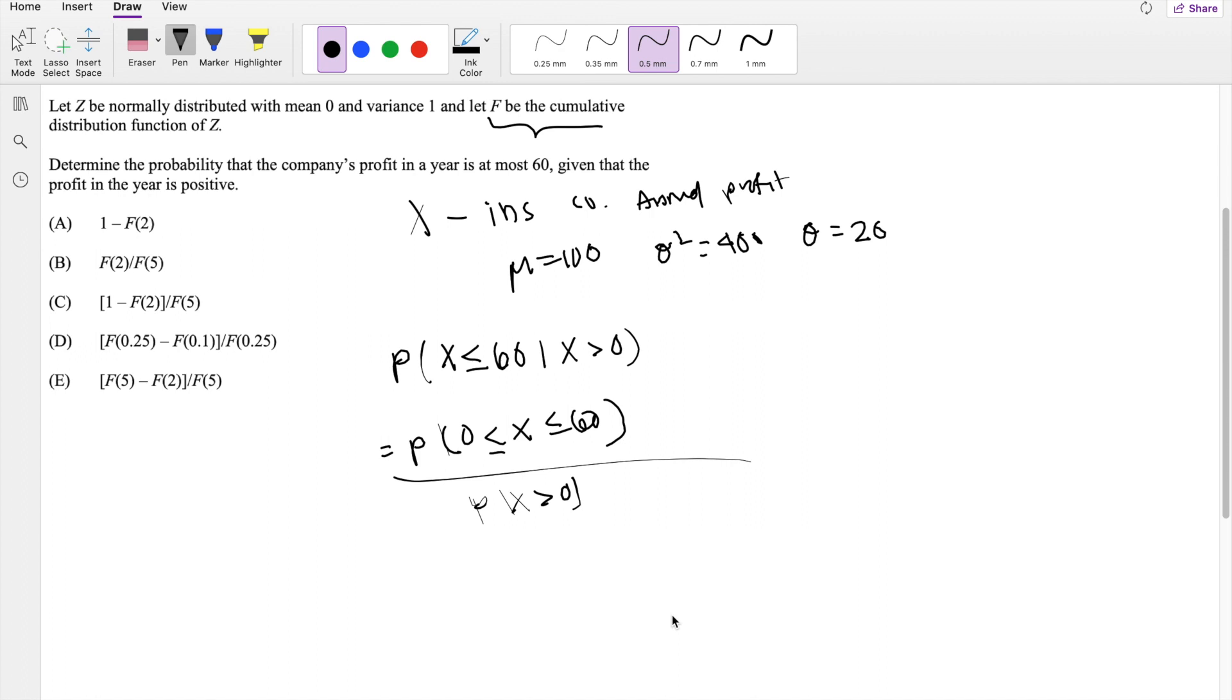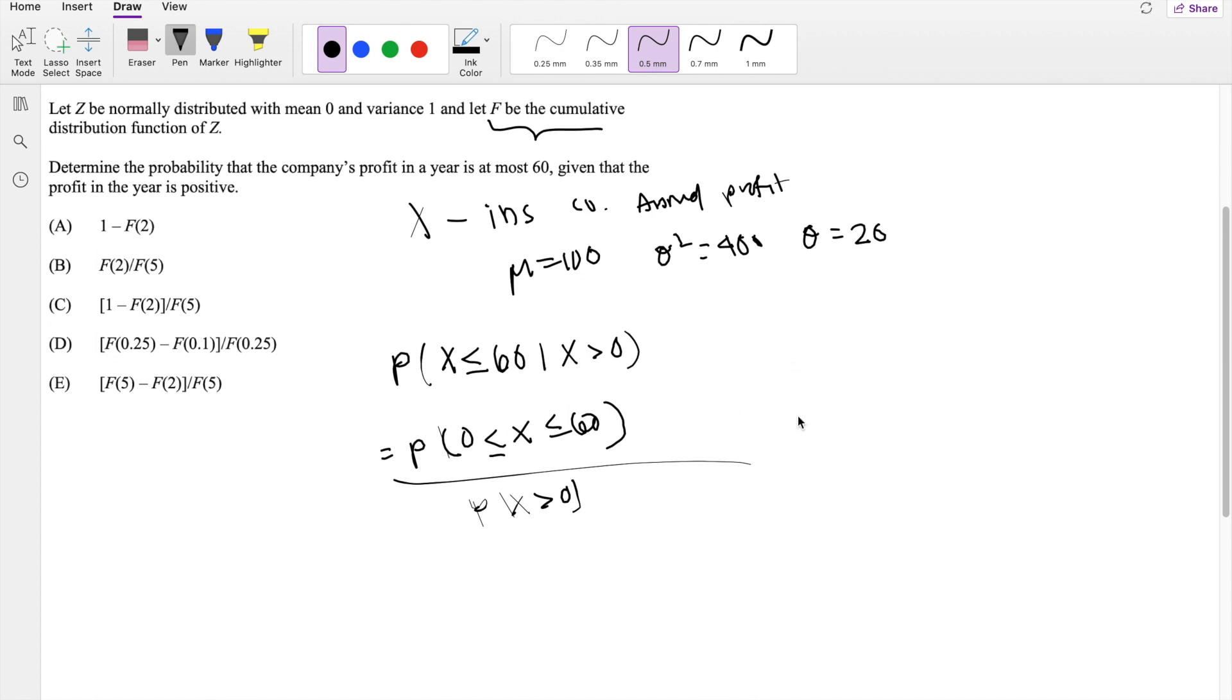Alright, let's dive right in. What is the probability? Because we know F is a standard normal distribution, we can just normalize this. Let's start with the numerator. If we normalize it, we can go 0 minus mean is 100, so that's negative 100, divided by standard deviation 20, is less than or equal to X minus 100 over 20, less than or equal to 60 minus 100 over 20.